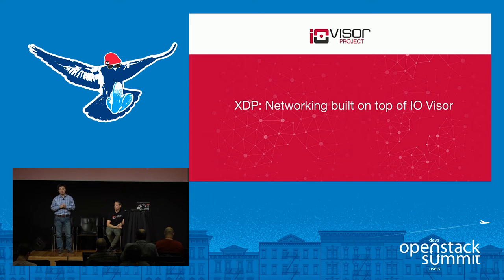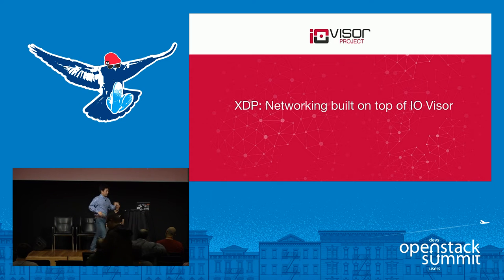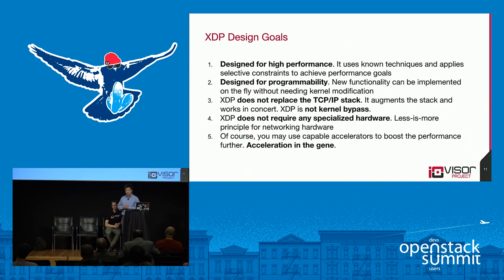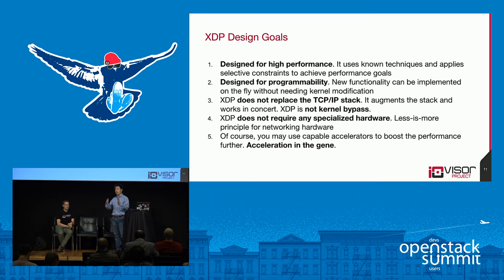XDP was proposed in early this year at the Linux NetDev 1.1 conference, where people were talking about how to improve networking for Linux. The XDP design had several goals in mind. Firstly, it must be high performance, because Linux networking solutions — for OpenStack and for other environments — have been criticized for bad performance. You may have suffered some low performance from networking solutions.